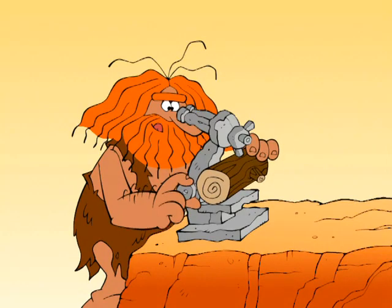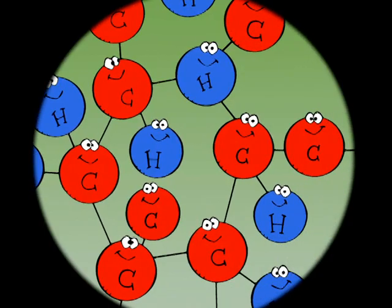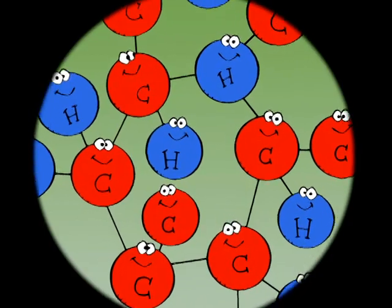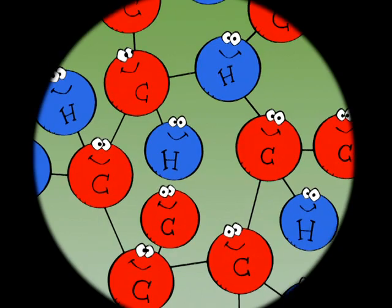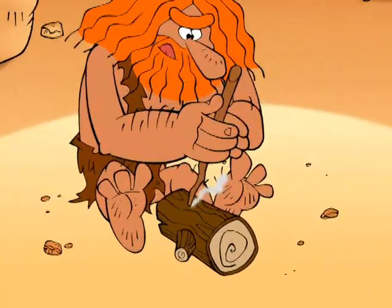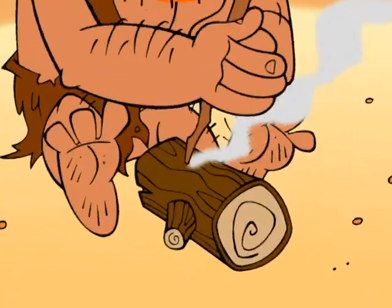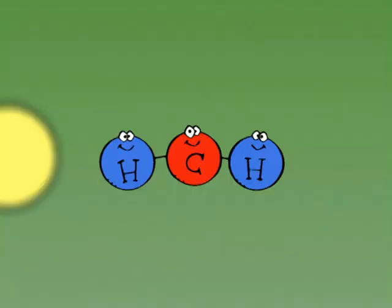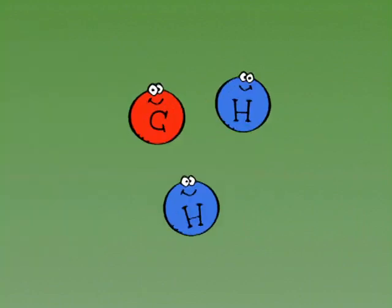At the molecular level, wood, like all other things that can burn, contains carbon and hydrogen. To make fire, you have to provide a little heat to the wood. This heat breaks the bonds between the carbon and the hydrogen.